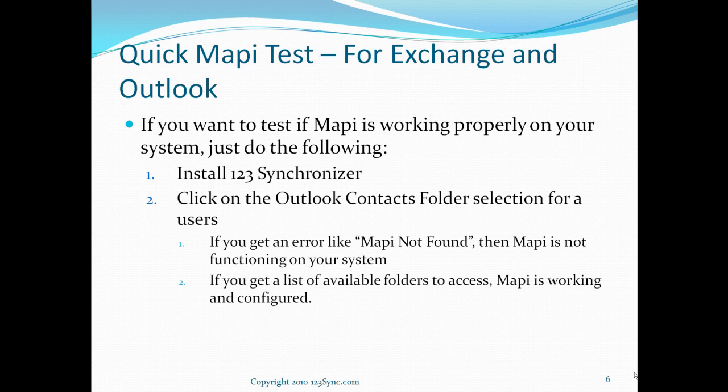Now, if you want to install it on Exchange and you don't know whether MAPI is there or not, this is very easy to test through our software. Just install it and click on the Outlook Contacts folder icon in our software and we'll start MAPI. If MAPI fails, we'll provide you with an error. It's very quick and easy, and I'll show you right now.